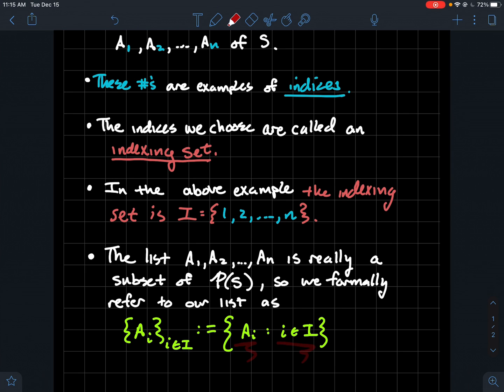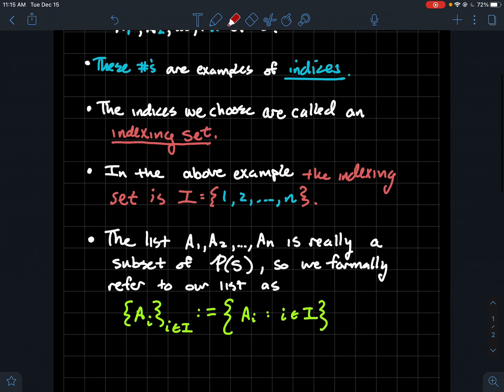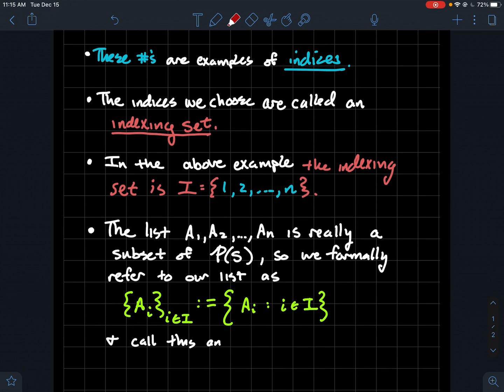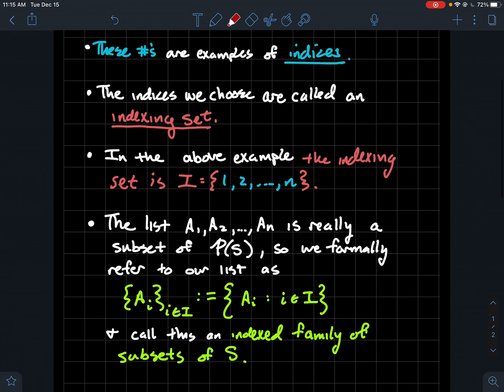That's the formal introduction to what we call an indexed family of subsets of S. We're going to take our list of subsets that we're interested in, put our squiggly brackets around it, and there should be some kind of convention as to how you've chosen to denote your subsets here.